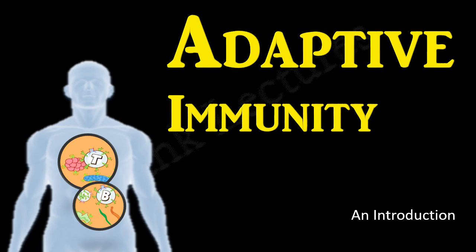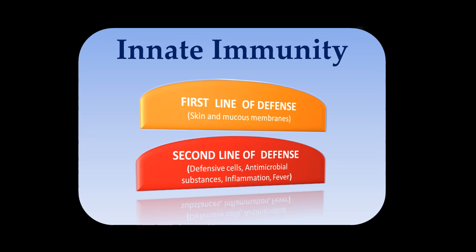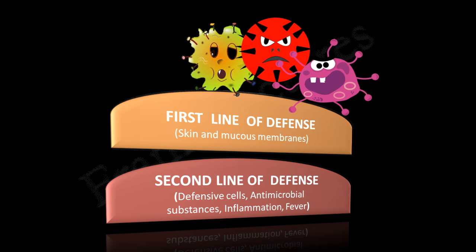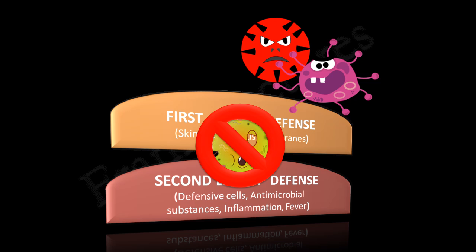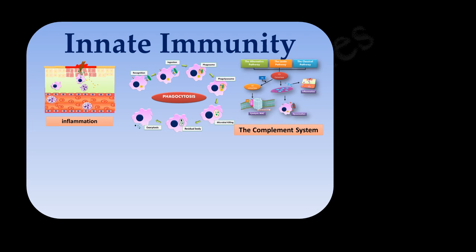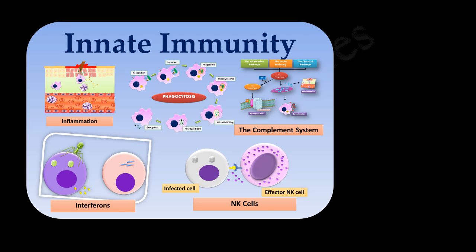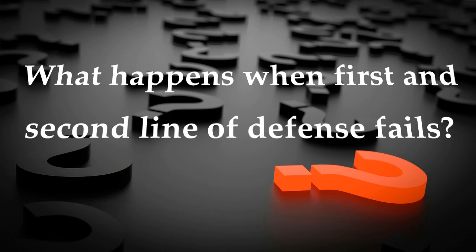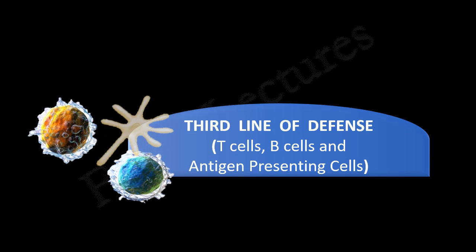Adaptive immunity: an introduction. Recall that innate immunity forms the first and second line of defense. The function of innate immunity is to block invading microbes and to destroy those which succeed in penetrating the body. We studied how innate immunity provides defense by inflammation, phagocytosis, complement fixation, interferons, and natural killer cells. But what happens when the first and second line of defense fails?